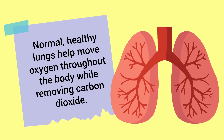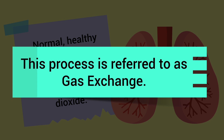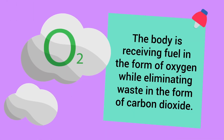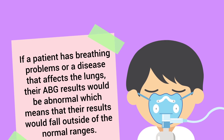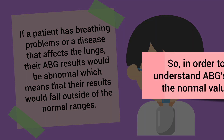In general, normal healthy lungs help move oxygen throughout the body while removing carbon dioxide. This process is known as gas exchange — the body is receiving fuel in the form of oxygen while eliminating waste in the form of carbon dioxide. If a patient has breathing problems or a disease that affects the lungs, their ABG results would be abnormal, meaning their results would fall outside of the normal ranges.